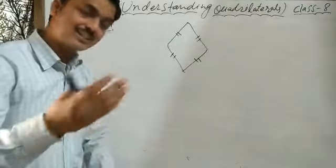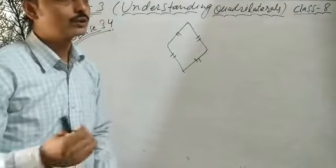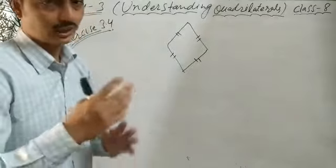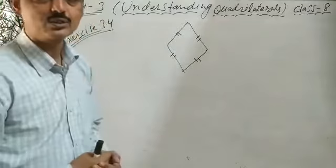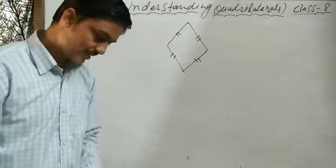Explain how a square is a rectangle. All four angles are 90 degrees, diagonals bisect each other — all the properties of a rectangle are satisfied in a square.